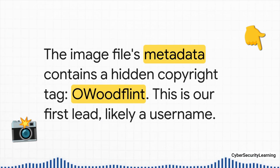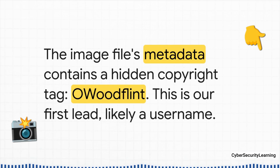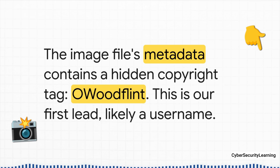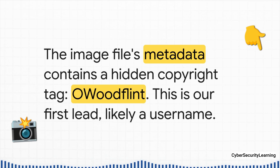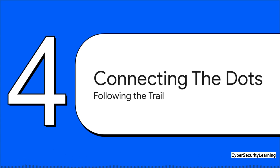Right away we get our first breakthrough. We run that image file through ExifTool, which reads all the hidden data attached to the file — the metadata. And look what we find: buried in the copyright field, the name "O Woodflint." That looks an awful lot like a username. And here's where the investigation really takes off — this is where we pivot. The whole game in OSINT is taking one tiny piece of information and using it to unlock the next one.